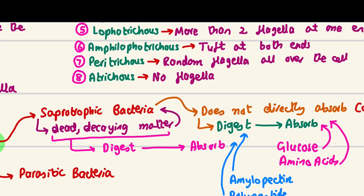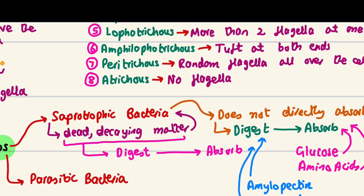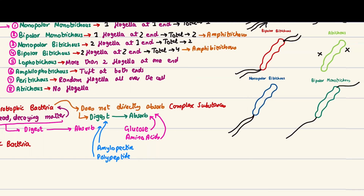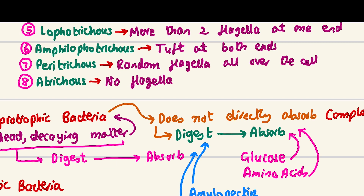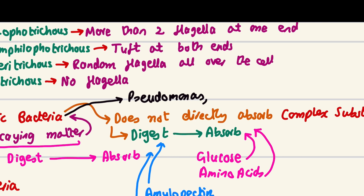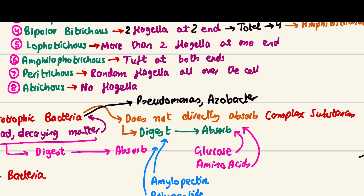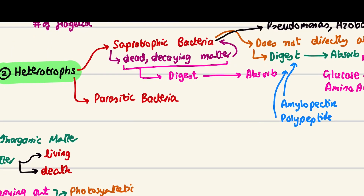Examples of saprophytic bacteria include Pseudomonas and Azobacter. Now let's talk about parasitic bacteria — these obtain nutrients from living organisms at the cost of the host organism.